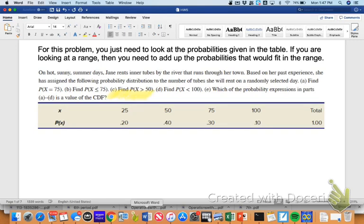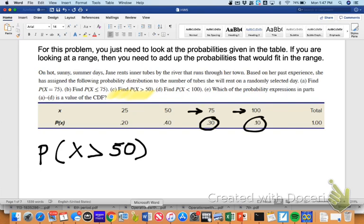So part C is now asking us to find the probability that X is greater than 50. So we are not going to include 50 because this is saying X is greater than 50, so this one would be greater than 50 because it's 75, and this one is greater than 50, so we're going to add those two probabilities together and get 0.40.